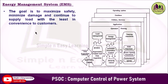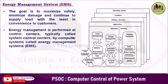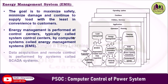The main goal of the energy management system is to maximize safety, minimize damage, and continue to supply load with the least inconvenience to customers. Energy management is performed at control centers, typically called system control centers or energy control centers, by computer systems called energy management systems. Data acquisition and remote control is performed by the system called SCADA.